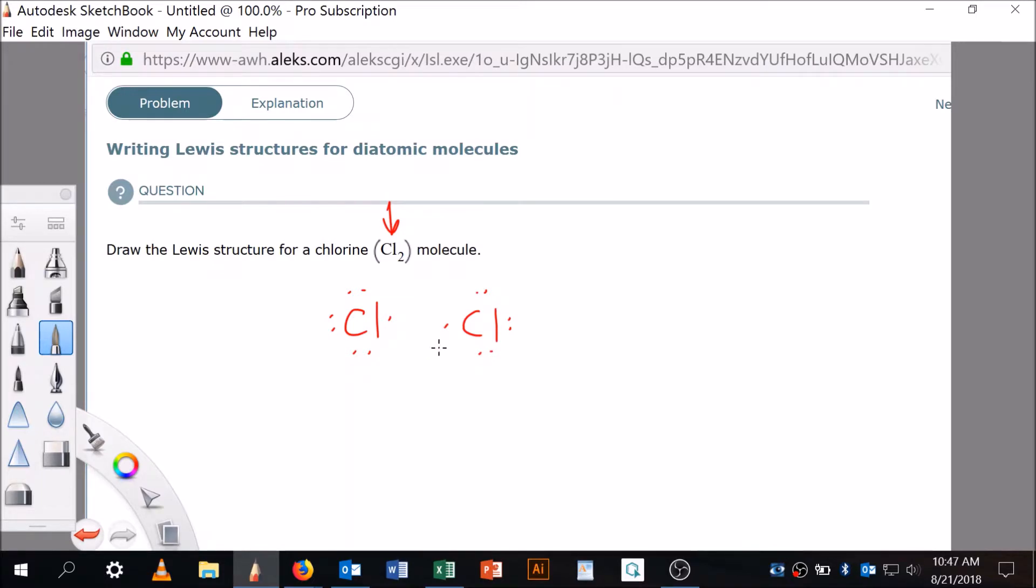All right, so first thing I'm gonna do is come here and erase two electrons and make a bond, because in a chlorine molecule you assume there's a bond there. And a bond is made of two electrons, more specifically it's made of two valence electrons. They're covalent.